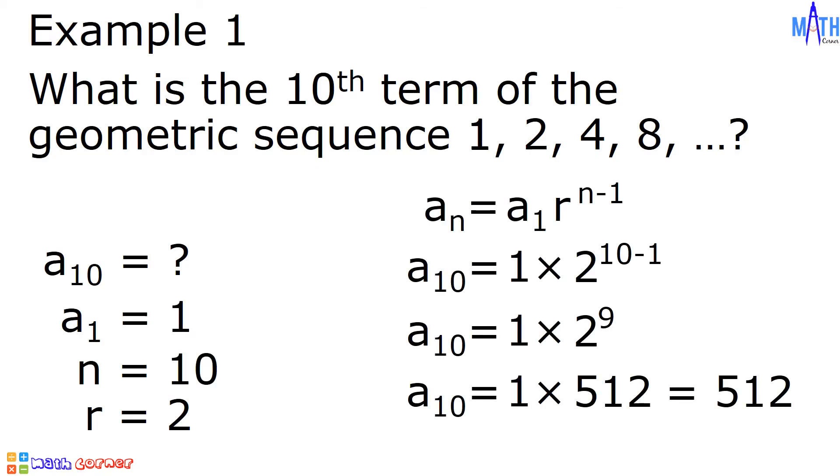1 times 512 is equal to 512. So 512 is the 10th term of the geometric sequence 1, 2, 4, 8, and so on.